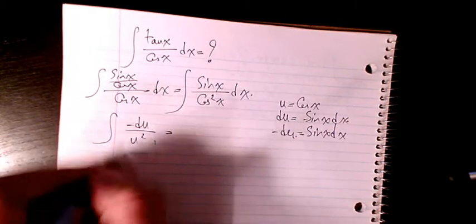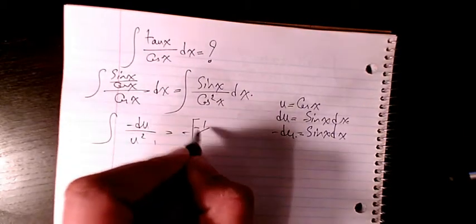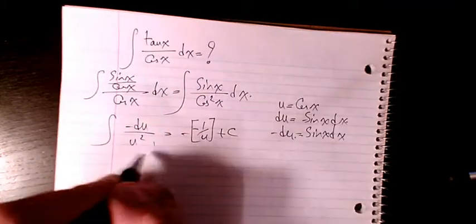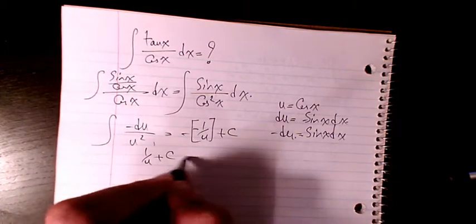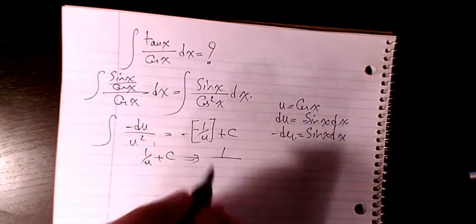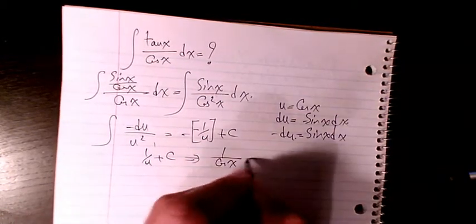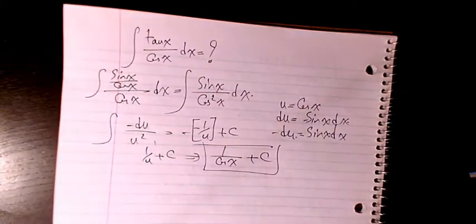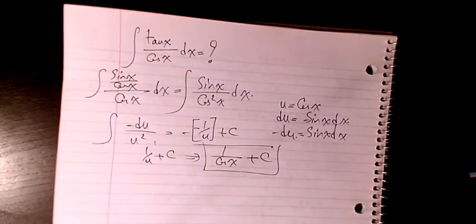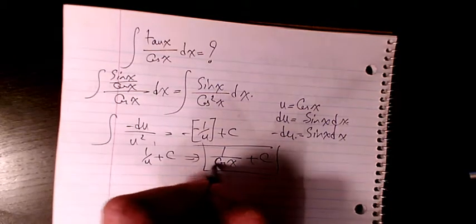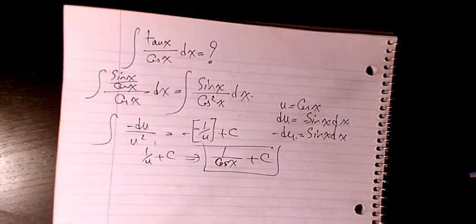And the integration will be negative 1 over u plus c. So it's going to be 1 over u plus c. Then it will be 1 over cosine x plus c. So that's the end of the answer: 1 over cosine x plus c.